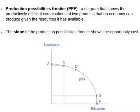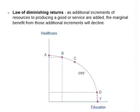At point F, all resources go to education and nothing goes to healthcare, so the level of healthcare is zero. A society could choose to produce any combination of healthcare and education on the production possibilities frontier. It does not have enough resources to produce outside of the PPF. In this example, the only way society can obtain more education is by giving up some healthcare. Therefore, the PPF is downward sloping from left to right.